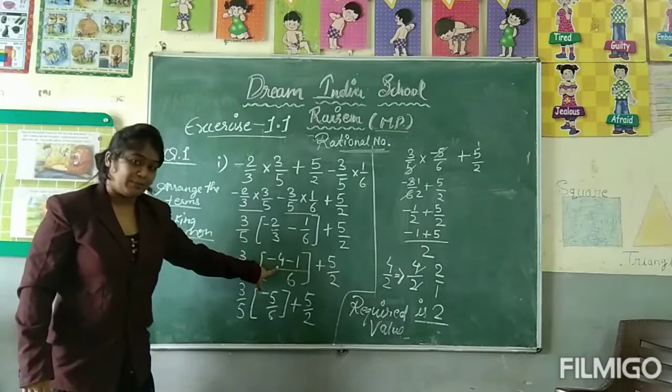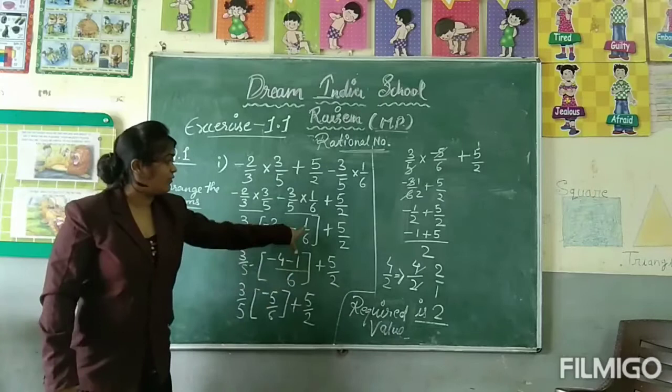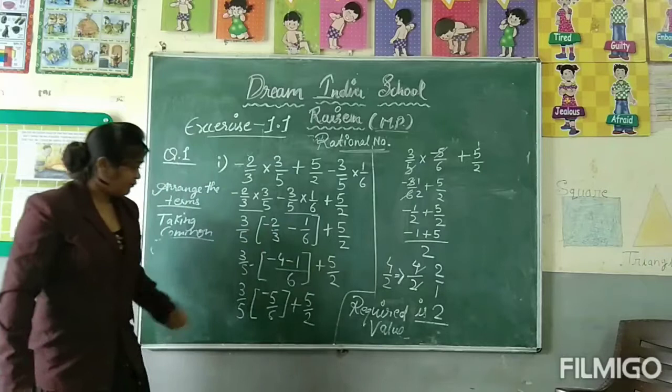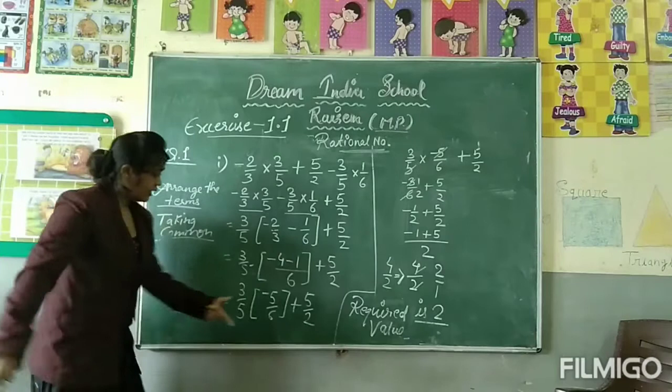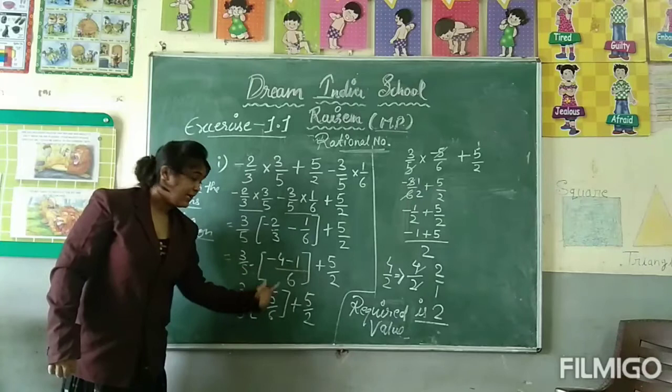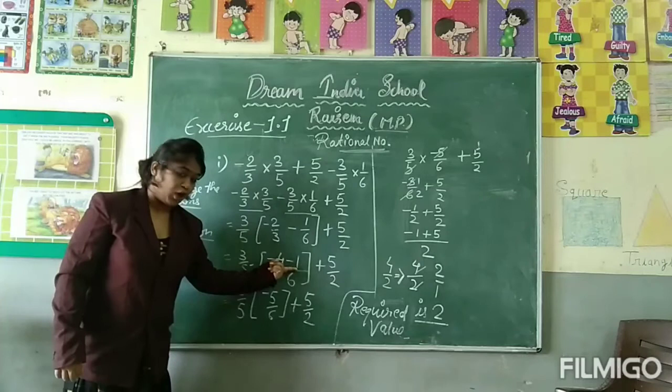Multiply by 1, we get minus 1. Bracket contains minus 5 upon 6. Minus minus plus gives 5, but where negative number is greater than smaller number, we take negative sign, minus 5 upon 6.